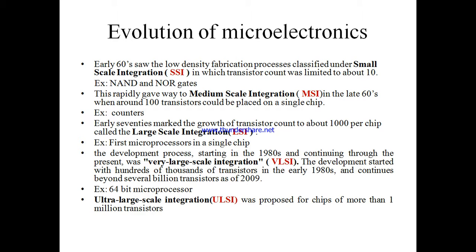The final step in the development process, starting in the 1980s and continuing through the present, is Very Large Scale Integration (VLSI). Development started with hundreds of thousands of transistors in the early 1980s and continued beyond several billion transistors as of the 2000s. For example, in 1986 the first 1-megabit RAM chips were introduced, containing 1 million transistors. Microprocessor chips crossed the million transistor mark in 1989 and the billion transistor mark in 2005.